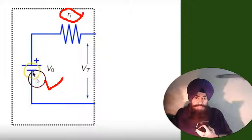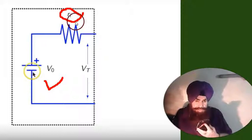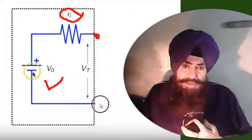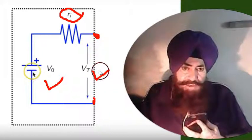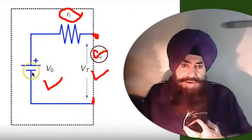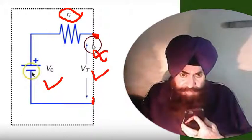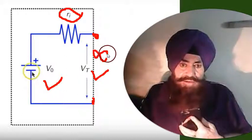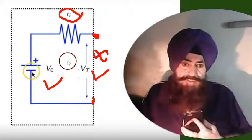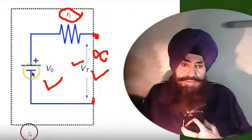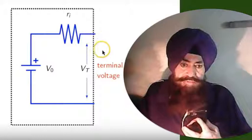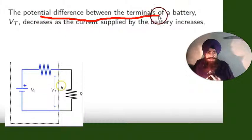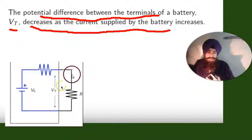The source voltage V₀ and the internal resistance are part of the voltage source — we have not connected it externally. VT is the terminal voltage. If no current is drawn, meaning infinite resistance is connected between the two points, then the terminal voltage equals the source voltage. The terminal voltage VT decreases as the current supplied by the battery increases.